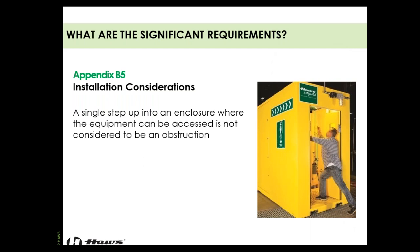One installation consideration in Appendix B5 of the ANSI standard states that a single step into an enclosure where the equipment is accessed is not considered an obstruction. This applies specifically to booth-type equipment — a heavy-duty, sealed, tempered portable compartment with a heater to prevent freezing — which cannot be made flush with the ground. So booth-type equipment is allowed one single step into the enclosure. For non-booth equipment, there is no step allowed — no change in level. If it is a booth, you get one single step.